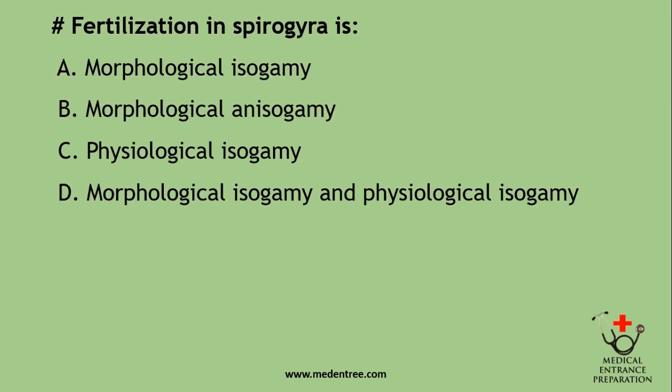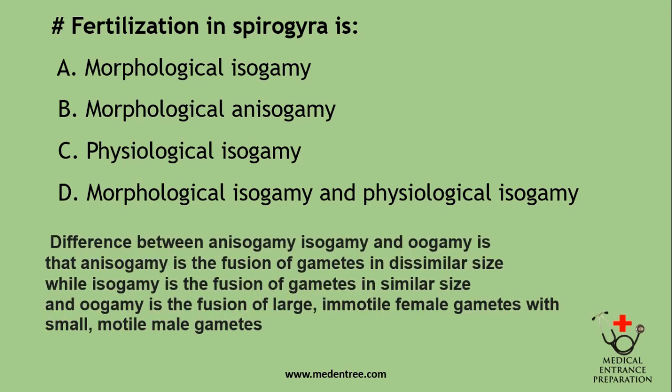Fertilization in Spirogyra is: morphological isogamy, morphological anisogamy, physiological isogamy, or morphological isogamy and physiological isogamy? Anisogamy is fusion of dissimilar-size gametes; isogamy is fusion of similar-size gametes; oogamy is fusion of large immotile female gametes with small motile male gametes. In Spirogyra, morphological isogamy is seen.